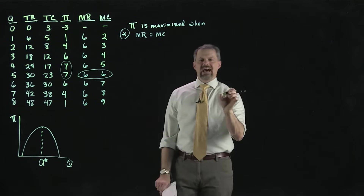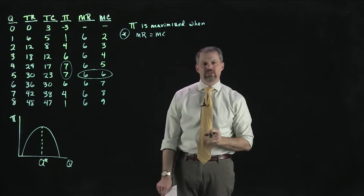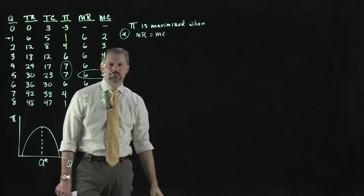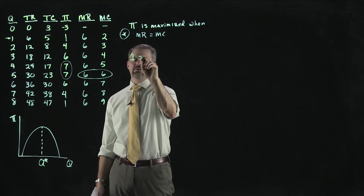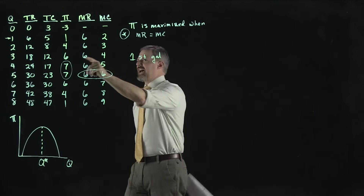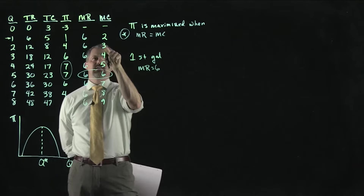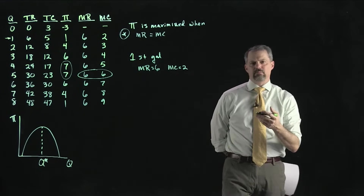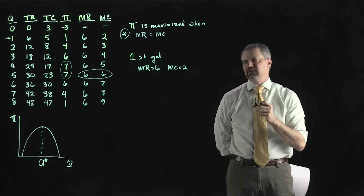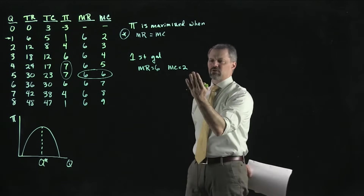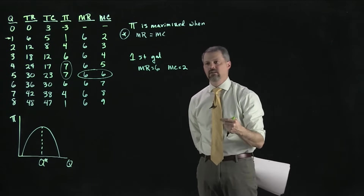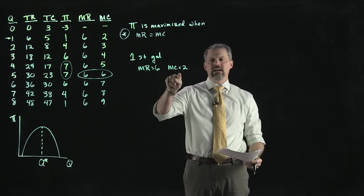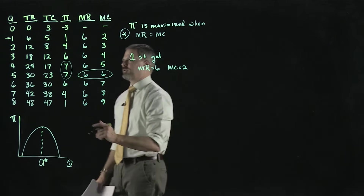Let's think about decisions one gallon at a time. For the first gallon, marginal revenue equals $6 and marginal cost equals $2. The decision rule for a decision maker is to take an action if and only if the marginal benefit is bigger than the marginal cost. Here the marginal benefit is the revenue earned. This certainly passes the test — the firm would want to produce the first gallon because it adds $6 to revenue and only $2 to cost.